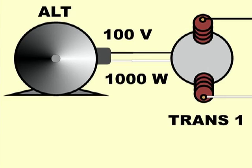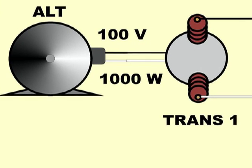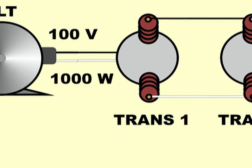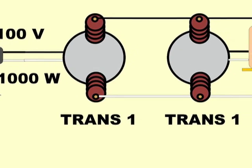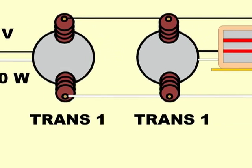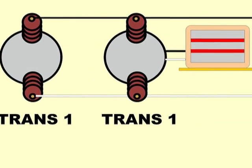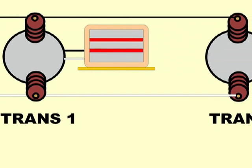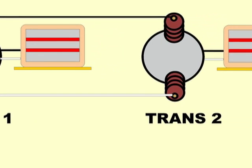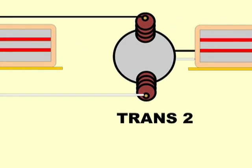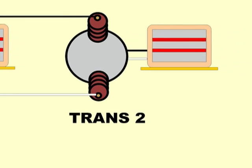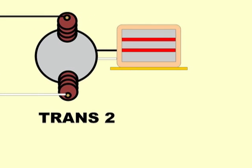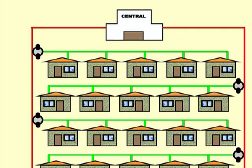It is easily possible to feed several houses with a single transformer. And when new users come about, transformers can be added to the high voltage lines in order to step the voltage down 100 times, obtaining 100 volts to feed another group of houses.